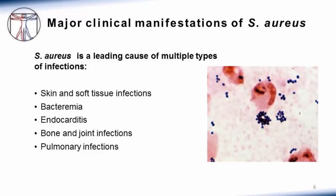Staph aureus is a leading cause of multiple types of infections. These include skin and soft tissue infections, bacterial infection of the bloodstream or bacteremia, infections of heart valves called endocarditis, bone and joint infections, and pulmonary infections. This picture shows the classic appearance: gram-positive cocci in clusters on a gram stain.